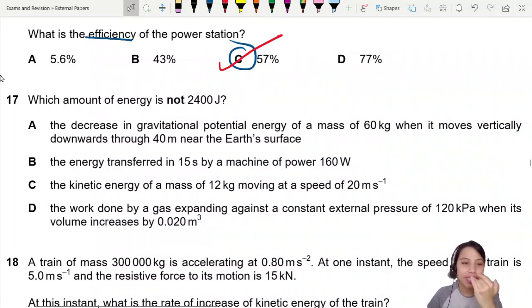This question 17, very troublesome. Let's go. Which amount of energy is not 2400 joules? We just gotta do some calculations, I guess. Decrease in GPE of a mass of 60 kg when it moves vertically downwards through 40 meters near the Earth's surface.